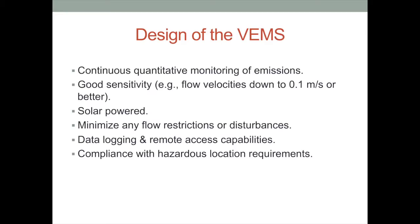The vent emission monitoring system put on the underground tank — and essentially the same capabilities are on the above-ground tank — has the objective of continuously quantifying the emissions coming off these tanks with as good accuracy as we could achieve. With the ultrasonic flow meter, we're able to get down to vent gas flow rates of about 0.1 meters per second or better.